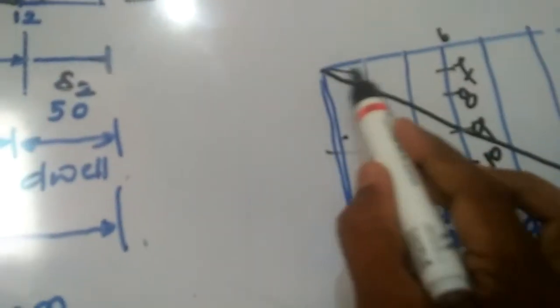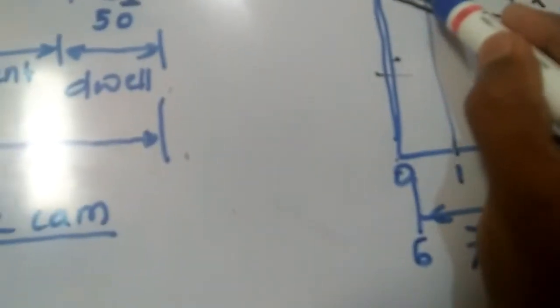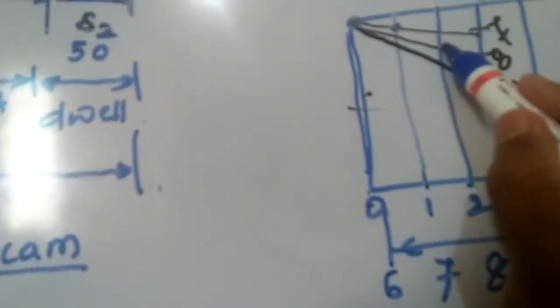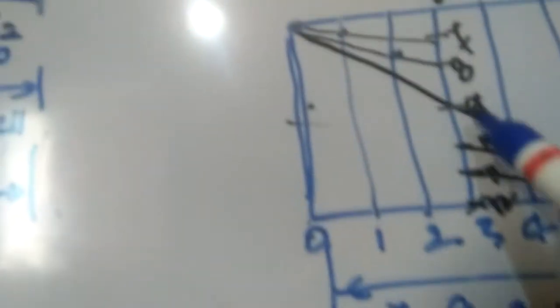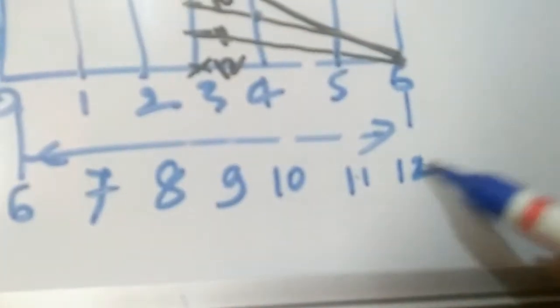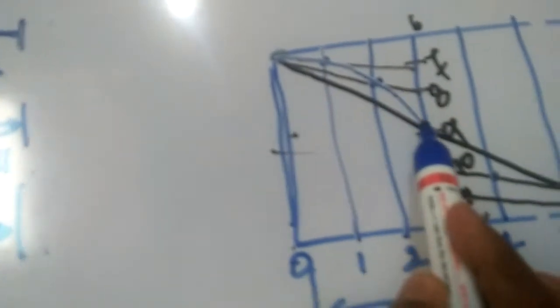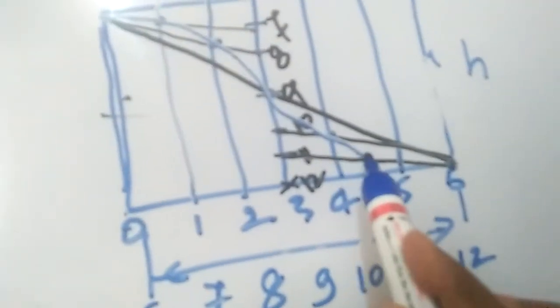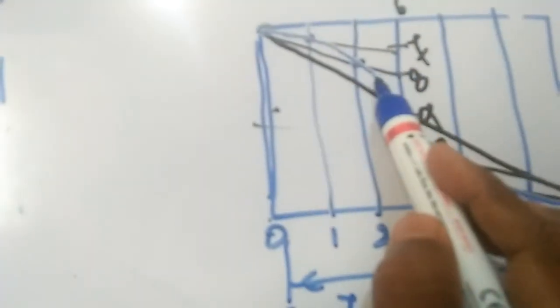Join the upper triangle and the lower triangle at the center. Where they make intersections: 6 is here, 7 is here, 8 is here, 9 is on the vertical line, 10 is here, 11 is here. At the end point you draw a smooth curve joining all these points. This curve is nothing but uniform acceleration and deceleration.